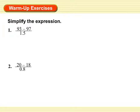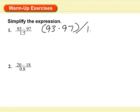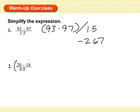Okay, simplify the expression. I'm not going to simplify it in any way other than grab my calculator and type in things like 93 minus 97 in parentheses, divide by 1.5. And I get negative 2.67. You just have to put these in parentheses before you divide.